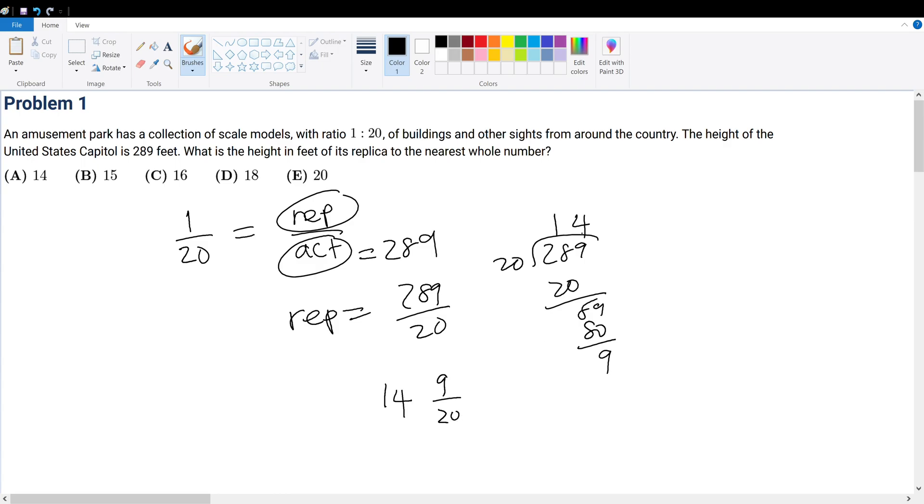Now, in order to round up or down, 14.5 all the way to 14.9 gets rounded up into 15. But 14.0 all the way to 14.1 gets rounded down into 14. In this case,